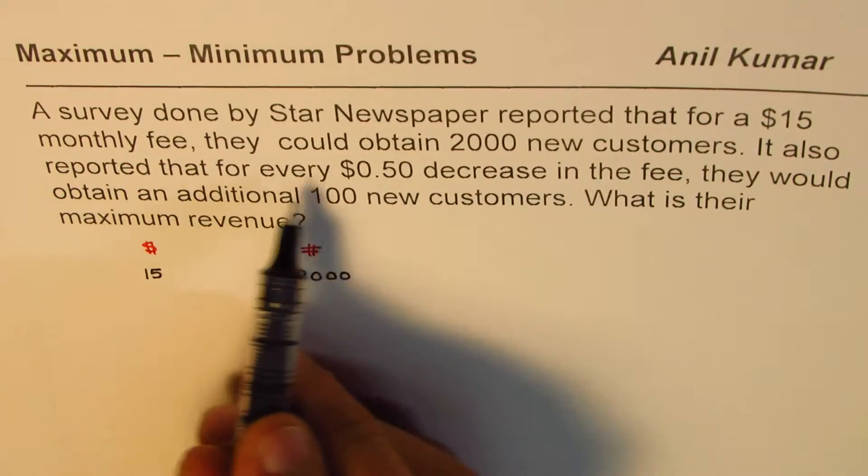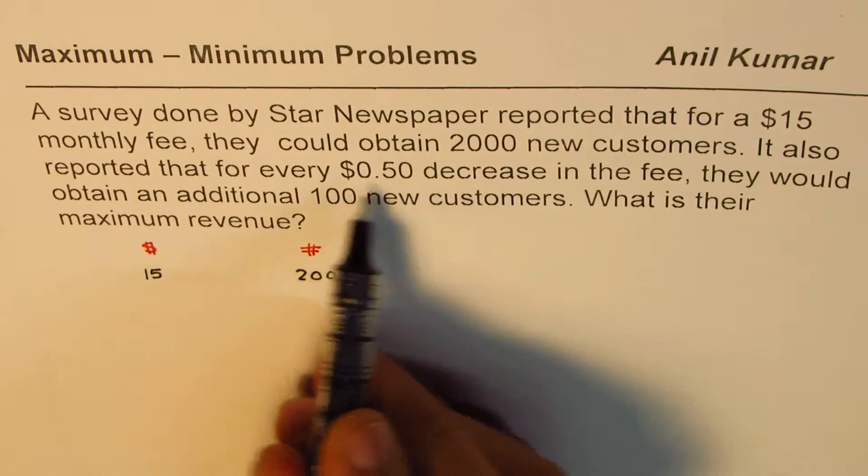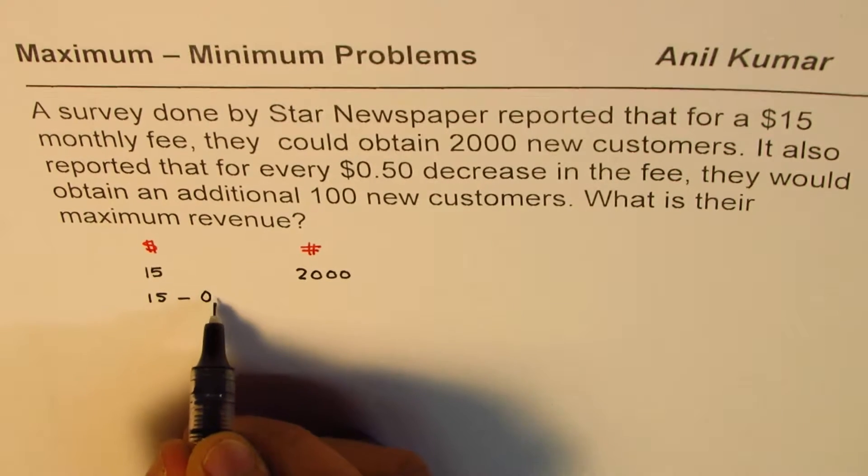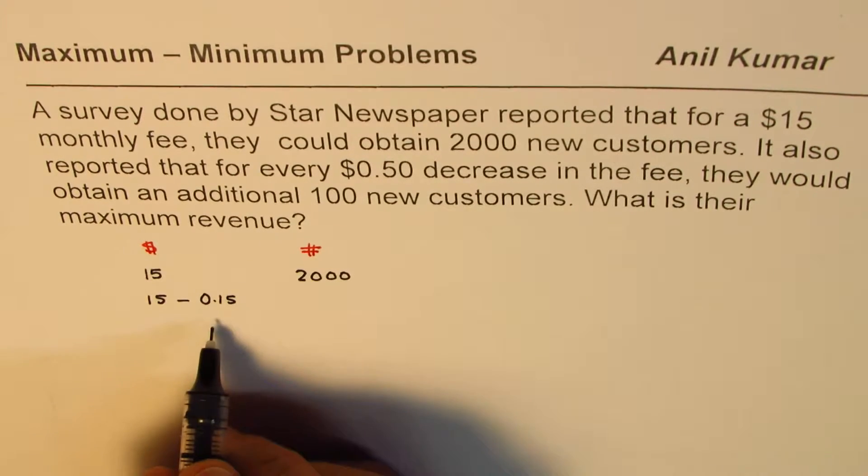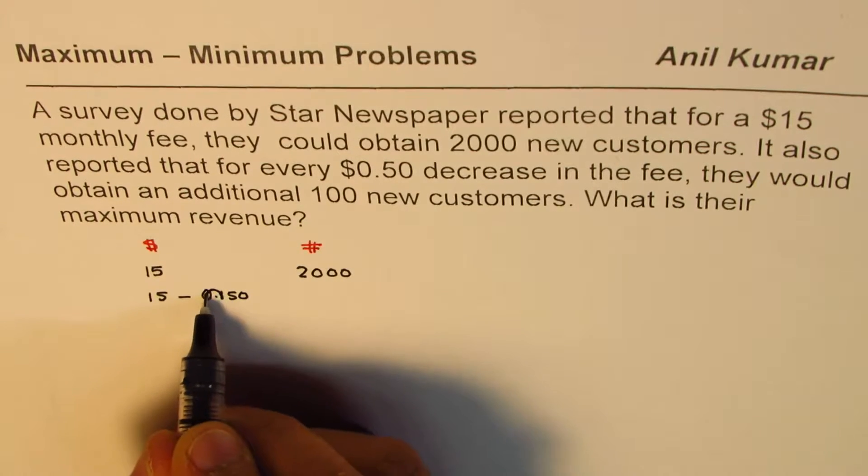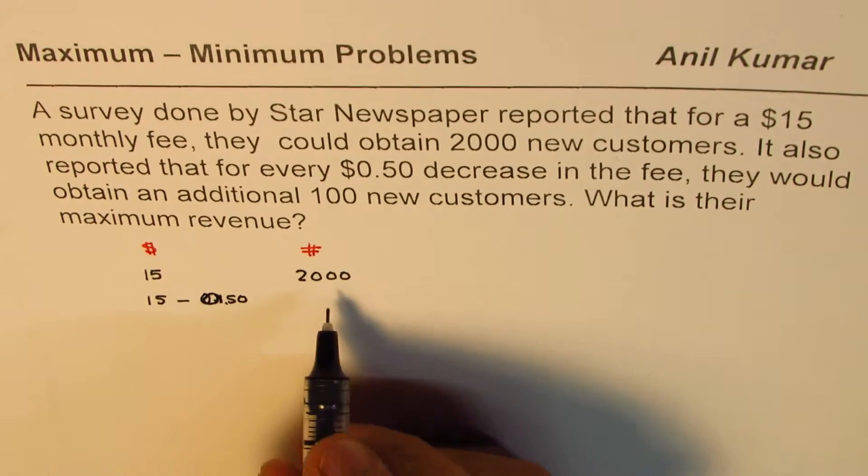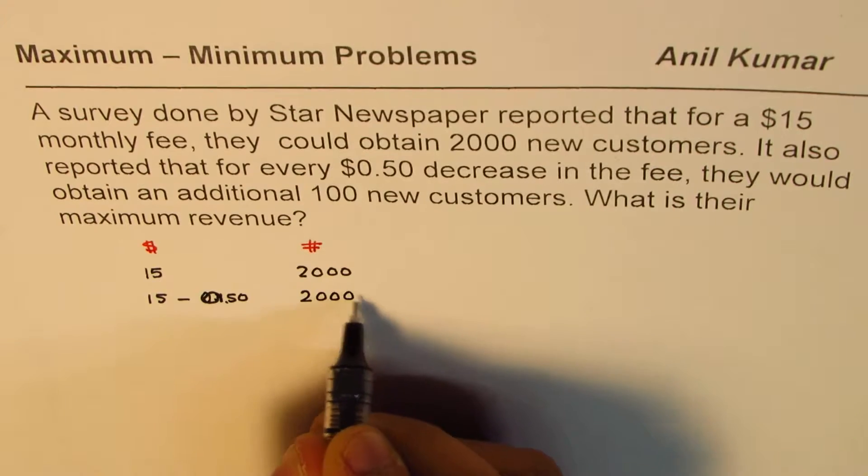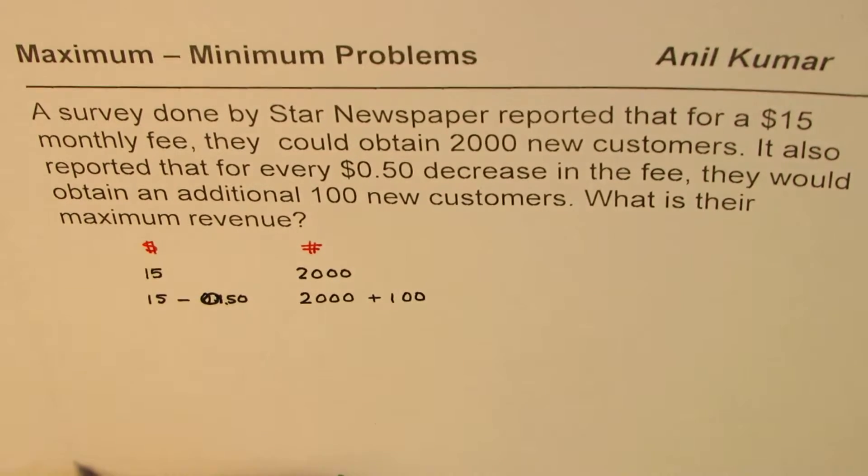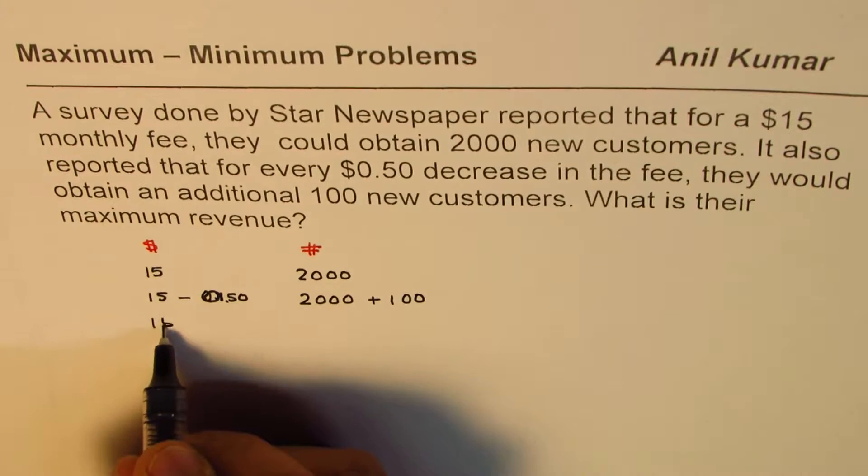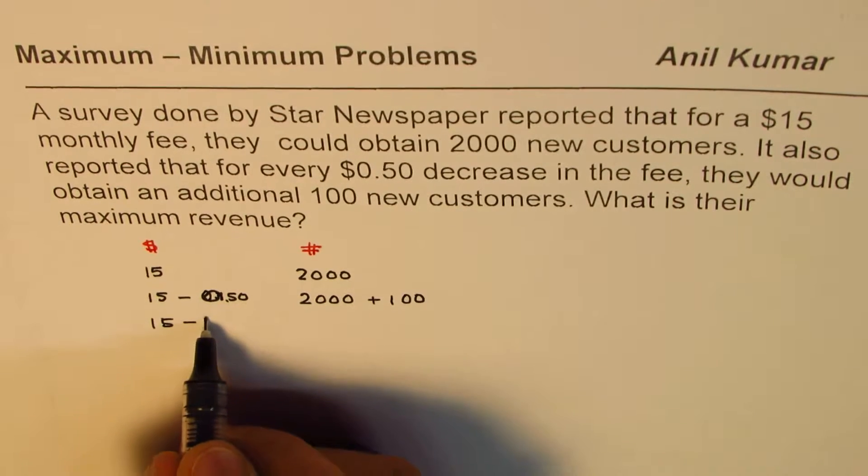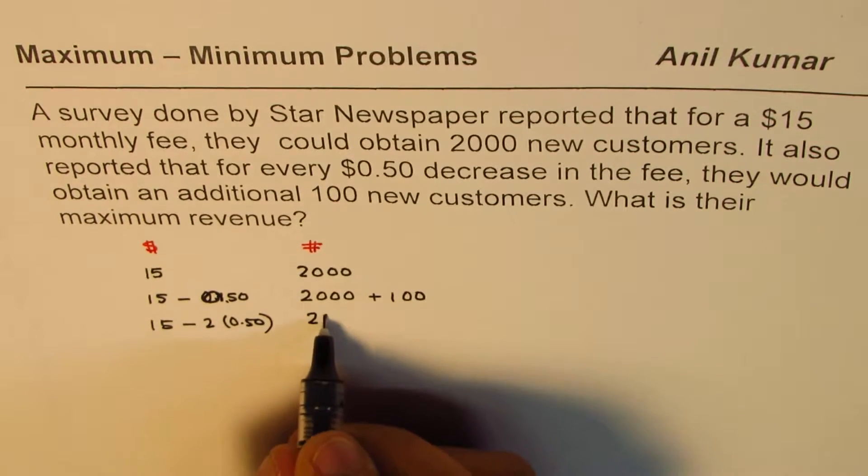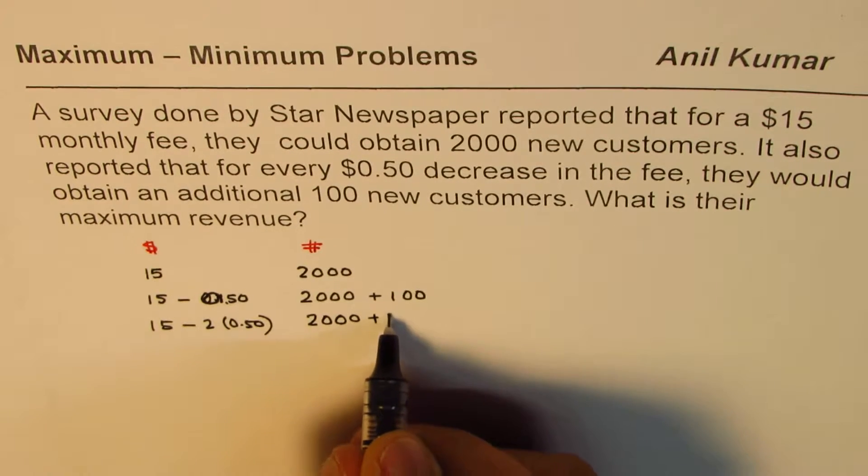It also reported that for every 50 cents decrease, that means if I decrease this amount, that is minus 0.50 dollars. In that case, 100 new customers will be there. So we will get 2,000 plus 100. Every means this, for every decrease means if I have 2 times 50 cents decrease, in that case, number of customers will increase by 2 times 100.